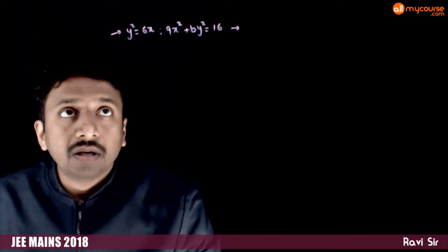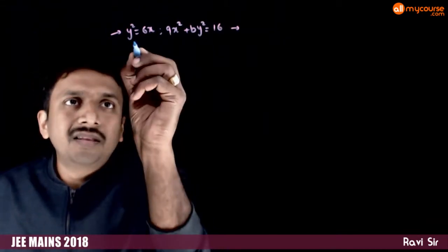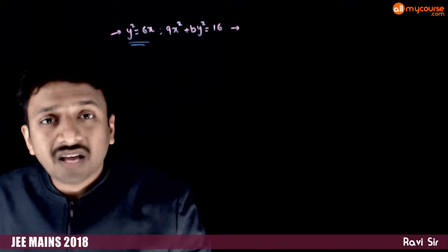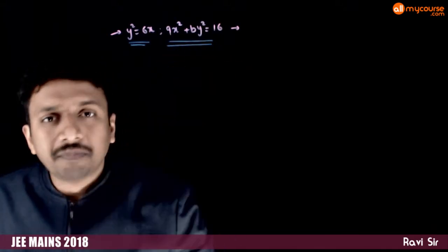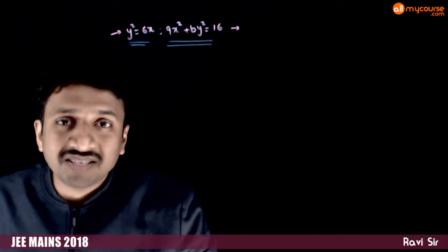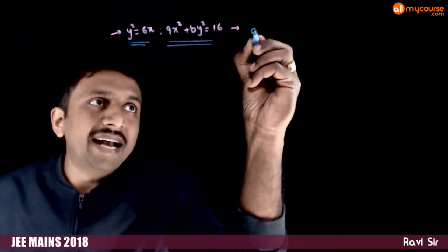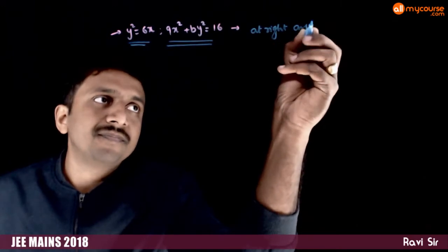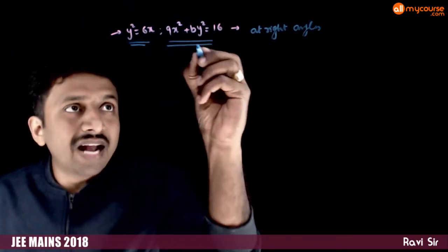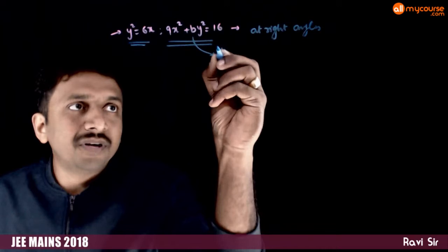In this question, you have given that the curves y square is equal to 6x and 9x square plus by square is equal to 16 meet at right angles. If that is so, you are asked to find the value of b.